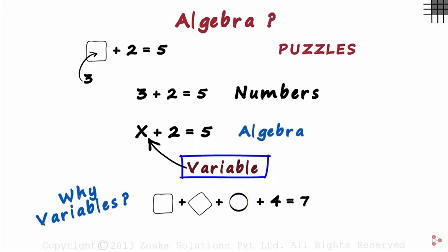Using variables, we can write it as x plus y plus z plus 4 equals 7. This was a little more convenient compared to the previous case.